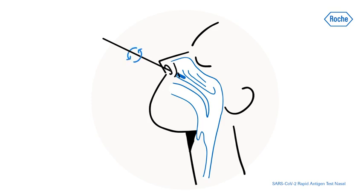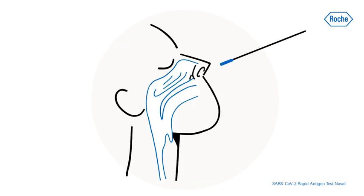Slowly rotate the swab in a circular path against the nasal wall at least four times for a minimum of 15 seconds. Repeat this with the same swab in the other nostril.